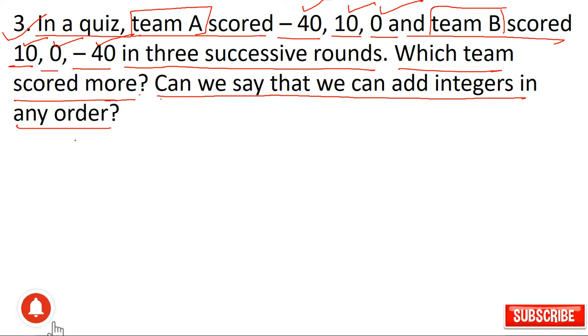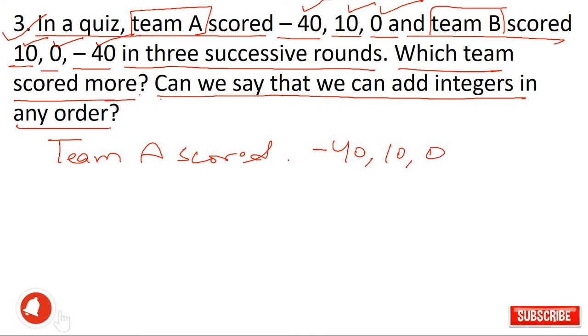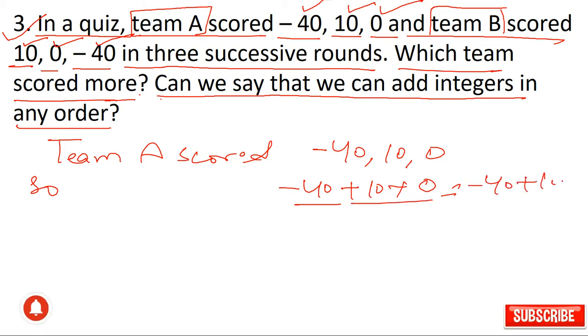So we can add them. Team A scored minus 40, 10 and 0. Minus 40 plus 10 plus 0. 10 and 0 equals 10. Minus 40 plus 10 - this is minus plus. So 40 minus 10 equals 30, and the answer is minus 30.